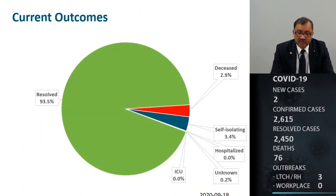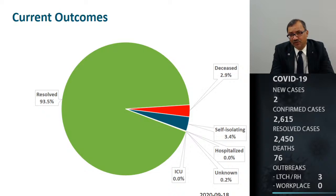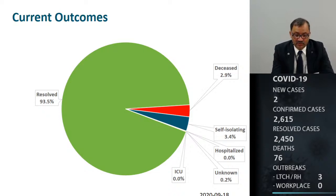Looking at the outcomes, the good news is almost 94% of the cases in our community are resolved. We lost roughly 3% of our cases to COVID in our region, and at least 3.4% of our population continues to self-isolate. This percentage has increased from last week and is a function of how many people are currently active — once they are discharged, these numbers continue to go down.